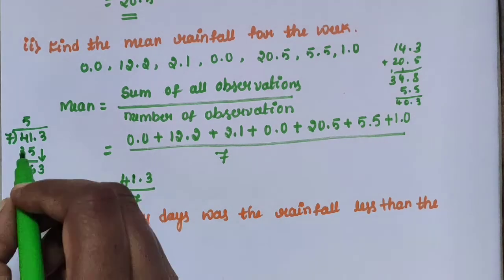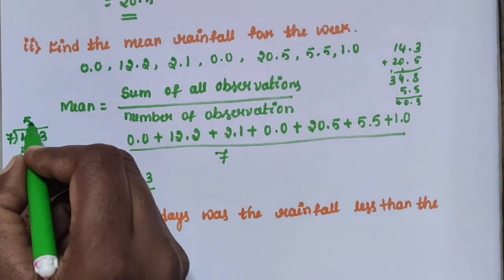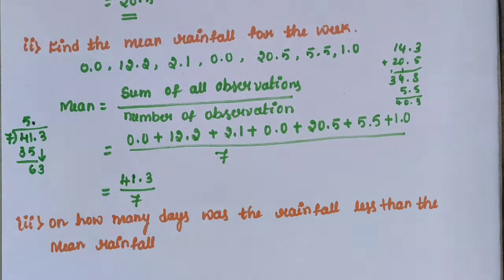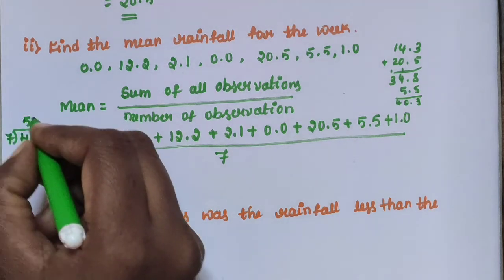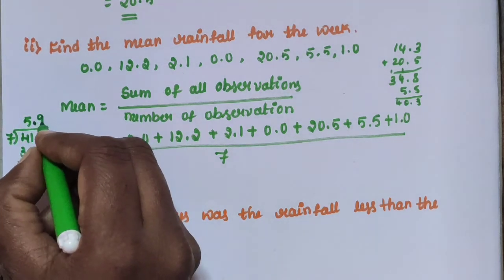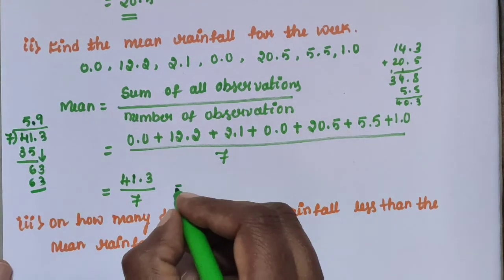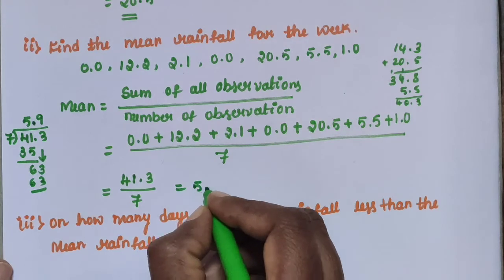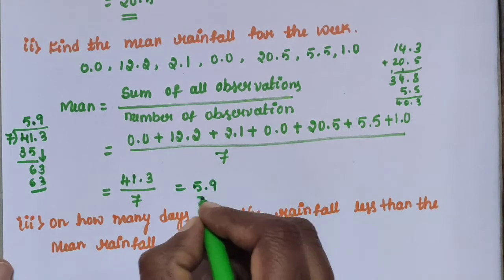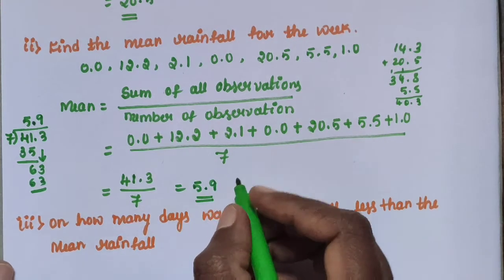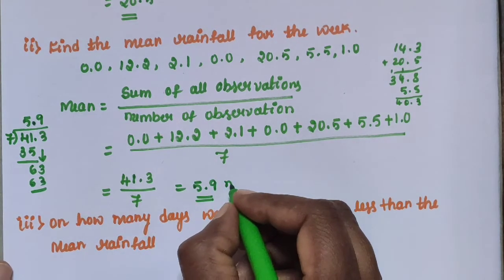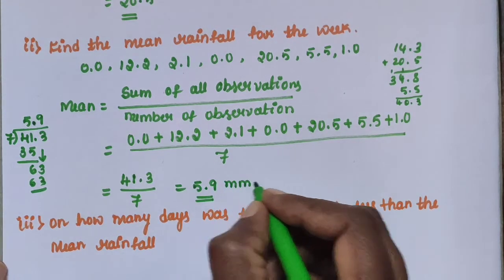41.3 divided by 7: 7 fives are 35, remaining 6.3, giving 5.9. The answer is 5.9 mm.